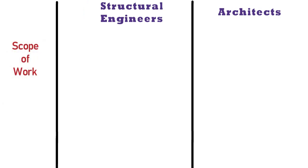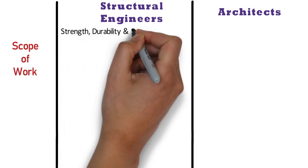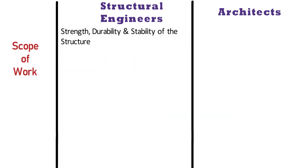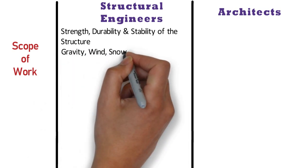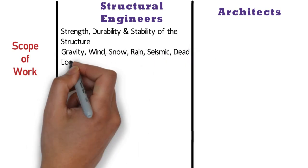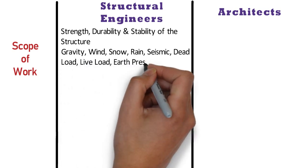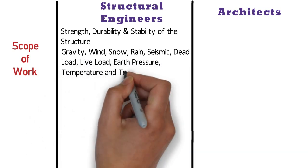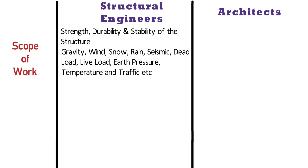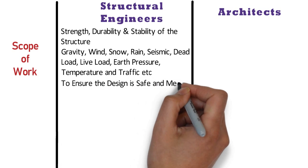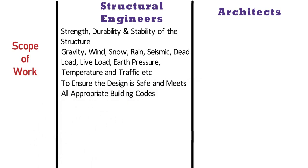Scope of Work: Structural engineers are responsible for the strength, durability and stability of the structure. They consider all the structural loads like gravity, wind, snow, rain, seismic, dead load, live load, earth pressure, temperature and traffic, while designing the structure in order to prevent loss of injury or life. The structural engineer's main responsibility is to ensure the design is safe and meets all appropriate building codes.